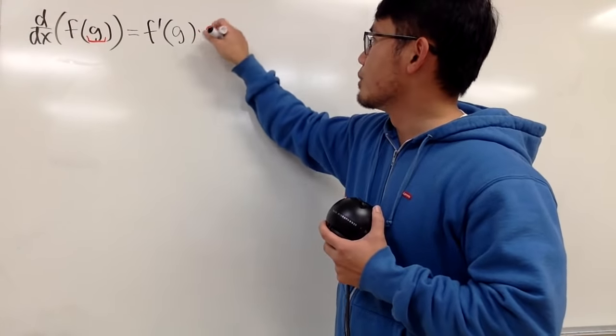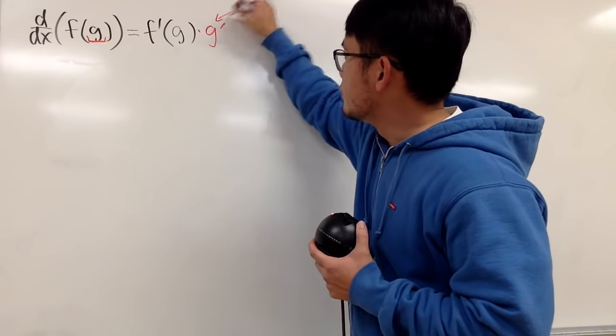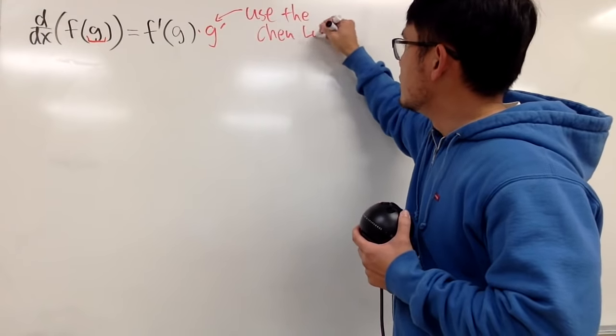So right here, you are going to multiply by g'. And this part, it's exactly what we usually refer to as the use of the chain loop, okay?